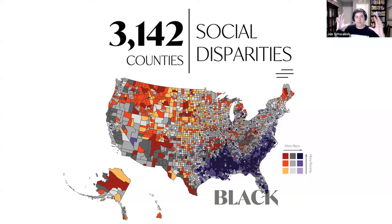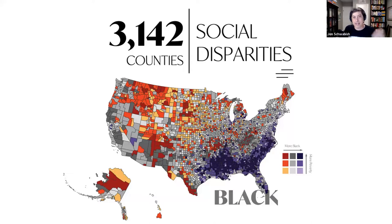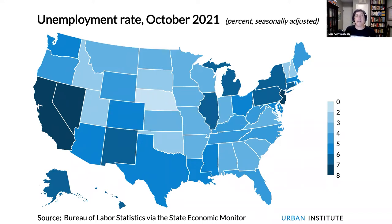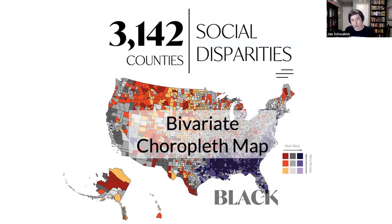Let me show you an example from a Tableau dashboard that illustrates this point. What you see is the top third of a Tableau dashboard with three bivariate choropleth maps — one for Black or African-American people, one for Hispanic or Latino people, and one for white people in the United States. A bivariate choropleth map is like a standard choropleth map — showing, for example, the unemployment rate across states with a single color ramp from light blue to dark blue — but instead of one variable, we have two. I'm going to zoom in on the legend so you can see what's being plotted here.